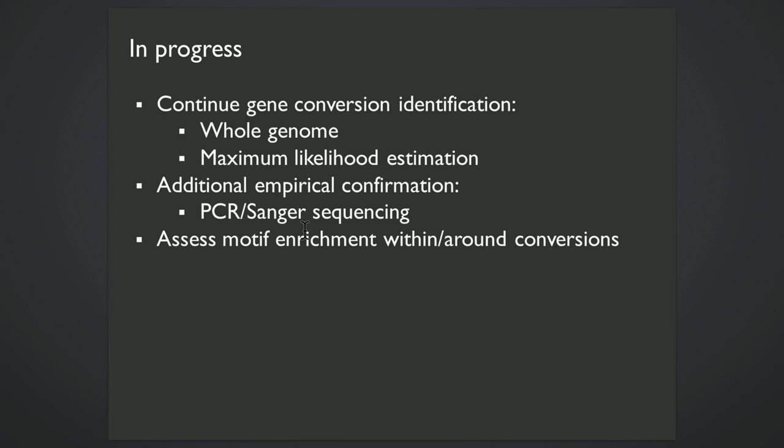This is very in progress. I'm continuing to expand across the whole genome. I've just presented data from the X and from the third chromosome here. Soon, I'll be doing some statistical analyses to get maximum likelihood estimates of gene conversion rates and tract lengths and empirically confirming a subset of the observed gene conversions I have, as well as doing some additional analyses, including looking for any motifs that are enriched in and around recombination events.